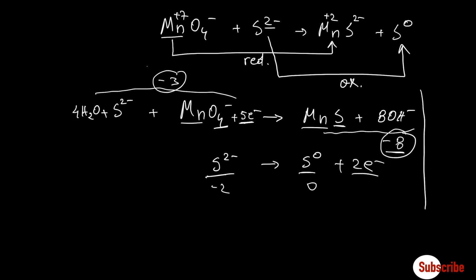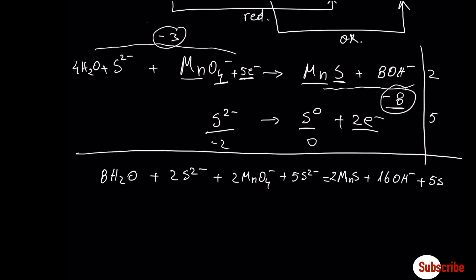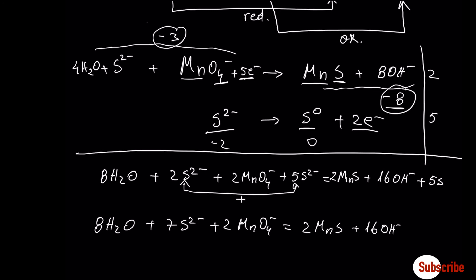To balance the electrons we find the smallest whole number — five and two give ten. Multiply the first half reaction by 2 and the second by 5. We can make a small simplification by combining terms, and the final balanced equation is obtained. That's it for this video — if you found it helpful give it a thumbs up, see you in the next video!